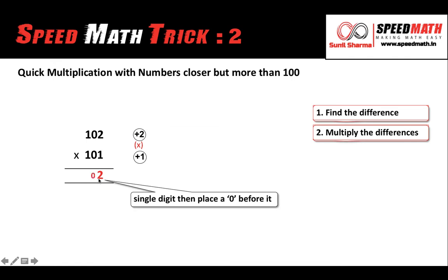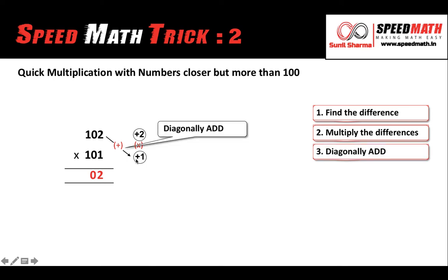Last step, diagonally, either this way or this way, whichever suits you. Now diagonally, because the sign is plus, we are going to add the numbers. Which numbers? 102 and this number 1. So 102 plus 1 will give you 103. Even if you add in this way, 101 plus 2 will get the same thing. So whatever is comfortable, whatever suits you, you can add it quickly. And there you go, you have the answer 10302. How easy it is, right? Let me take one more example.